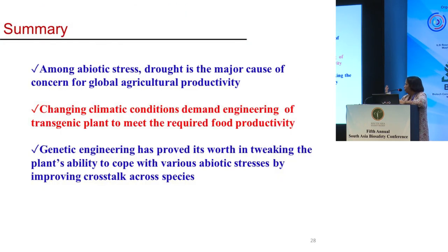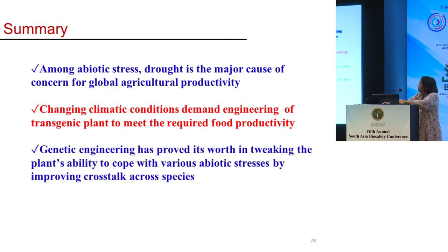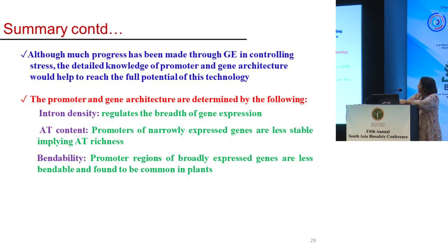To summarize the overall talk: among abiotic stresses, drought is a major cause of concern for global agricultural productivity. Changing climatic conditions demand engineering of transgenic plants to meet the required food productivity. Genetic engineering has proved its worth in tweaking the plant's ability to cope with various abiotic stresses by improving crosstalk across species — not just within plants, but also with bacterial and yeast features. Although much progress has been made through genetic engineering in controlling stress, detailed knowledge of promoter and gene architecture would help reach the full potential of this technology — which is what we've been trying to address, though it's at a very preliminary stage.